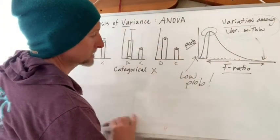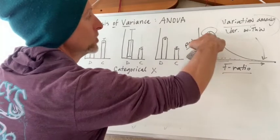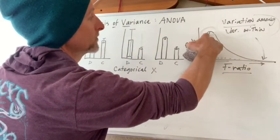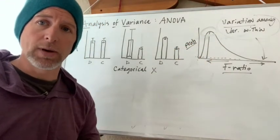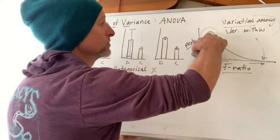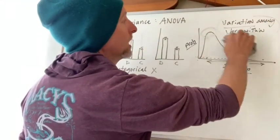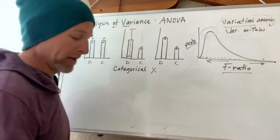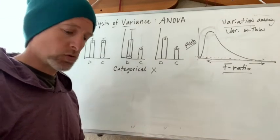All of these parametric statistics are testing that null situation. They're testing the null model. And if you're looking for significance, what you're looking for is to reject the null model. The f-distribution is a distribution of what happens under null circumstances. When there's no real pattern, what's the probability of getting a given f-score?